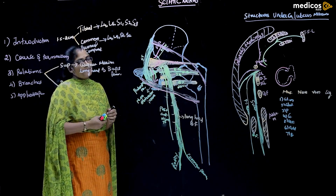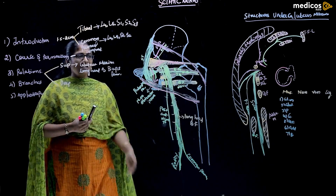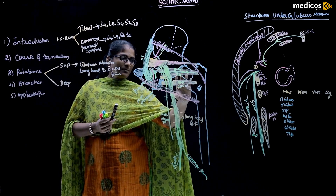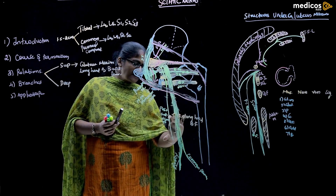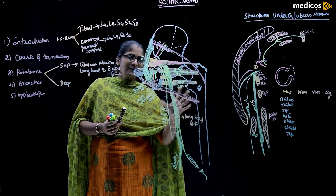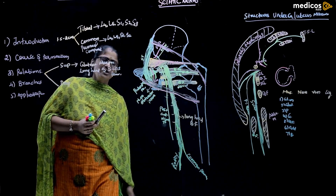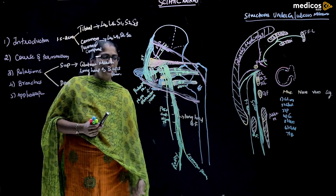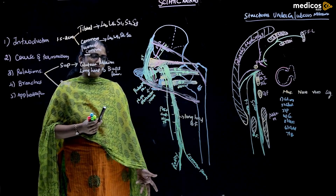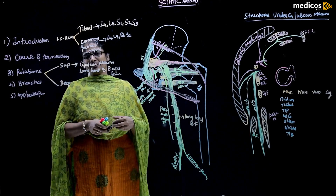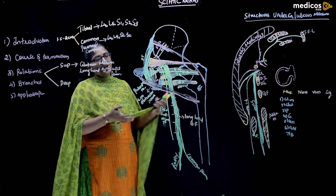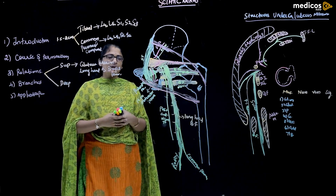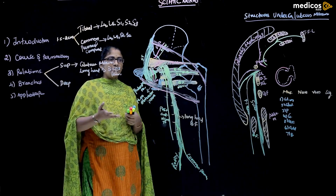The applied aspect: if we sit on the corner of a chair for a long time, the part of the sciatic nerve between the lower border of the gluteus maximus and the biceps femoris is compressed. This leads to paresthesia of the leg and foot, which is called 'sleeping foot.' This paresthesia is due to compression of the sciatic nerve over a prolonged period.